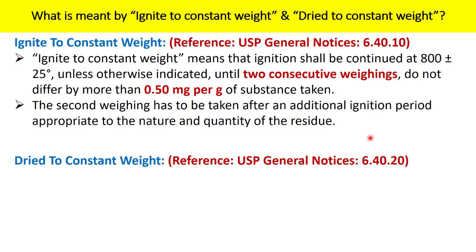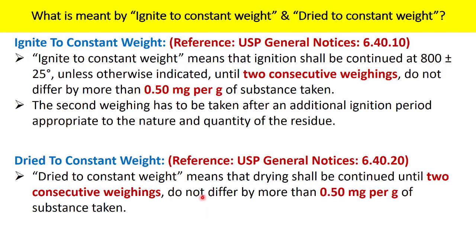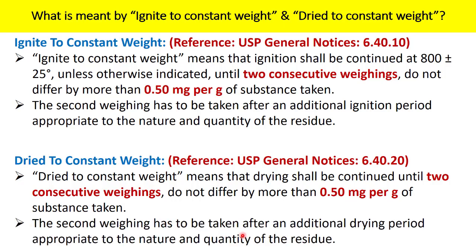Let us now talk about dry to constant weight. The reference is USP General Notices 6.40.20. Dry to constant weight means that drying shall be continued until two consecutive weighings do not differ by more than 0.50 milligram per gram of the substance taken. It is almost the same as ignite to constant weight, and the second weighing has to be taken after an additional drying period appropriate to the nature and quantity of the residue.